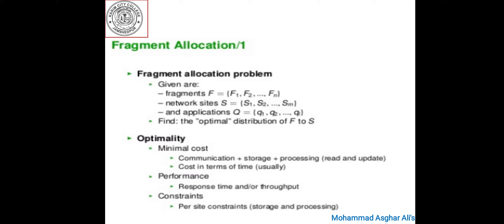Number one is minimal cost. The cost function consists of: the cost of storing each fragment Fi at a site Sj, the cost of acquiring Fj at site Sj, the cost of updating Ft at all sites where it is stored, and the cost of data communications. The allocation problem then attempts to find an allocation scheme that minimizes a combined cost function.